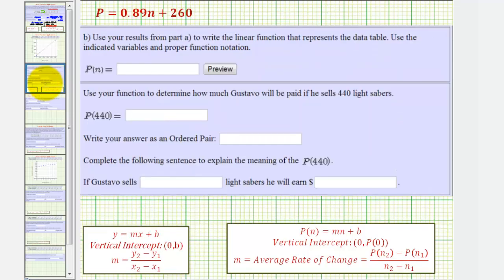The next part asks us to use the results from part a to write the linear function that represents the data. We just found this equation. But to use function notation, we will replace p with p of n, where n is the input variable. The linear function would be p(n) equals 0.89n plus 260.